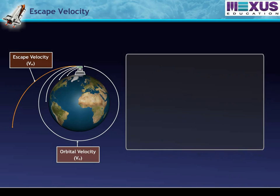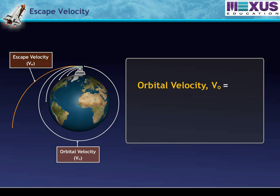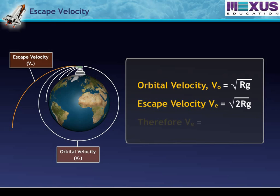We know that orbital velocity VO equals the square root of Rg and escape velocity VE equals the square root of 2Rg. So escape velocity VE equals the square root of 2 times VO.